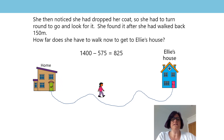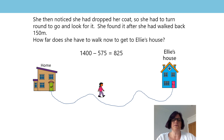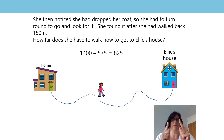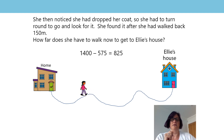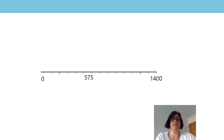Now, what would happen if Molly got part of the way to her friend's house and realised she'd dropped her coat? She'd need to go back and pick it up. What happens when she turns around and goes back on herself? Will she be getting closer to her home or to her friend's house? That's right — she'll be getting closer to home and further away from where she wants to get to. The total distance is 1400 metres. She's walked 575, so she needs to walk a further 825 to get to Ellie's house.